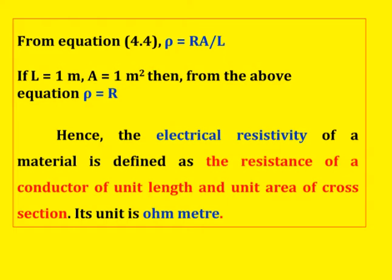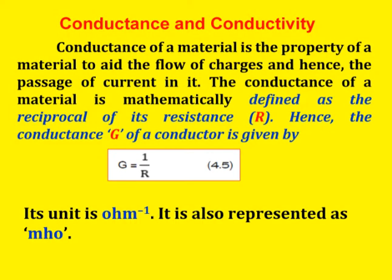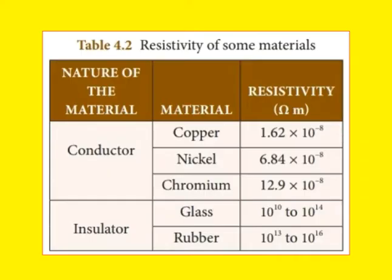Next, conductance and conductivity. Conductance of a material is the property that aids the flow of charges and hence the passage of current in it. Conductance is mathematically defined as the reciprocal of its resistance R. Hence the conductance G of a conductor is G = 1 / R. Its unit is ohm⁻¹, also represented as mho (MHO). Here are some resistivity values of some materials — this could be asked in objective type questions, and it is very important. In NPC exams this question is asked many times.